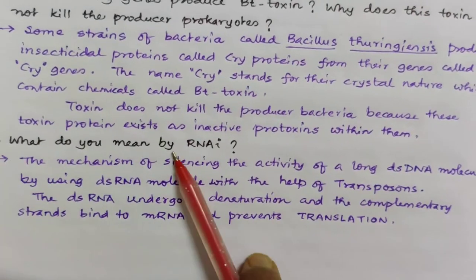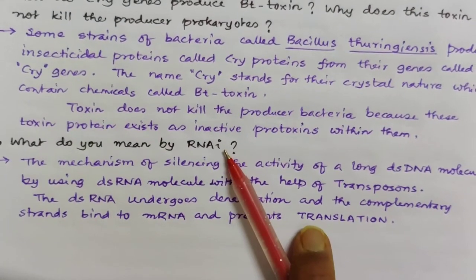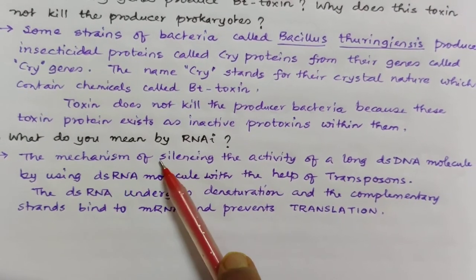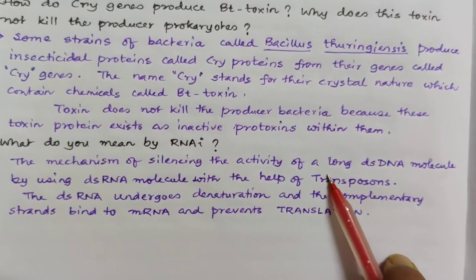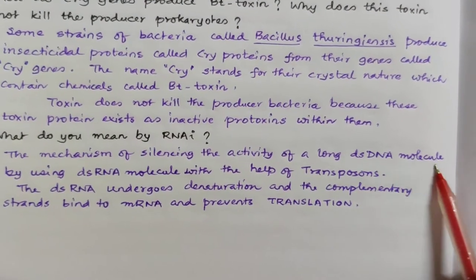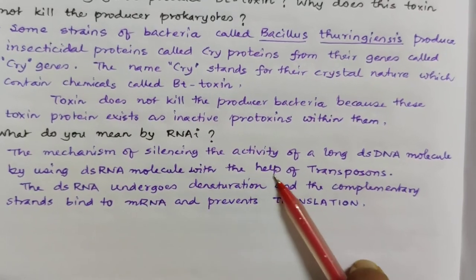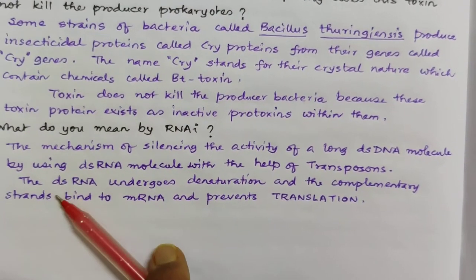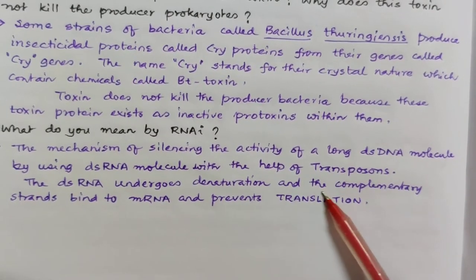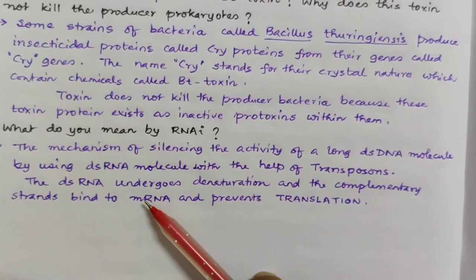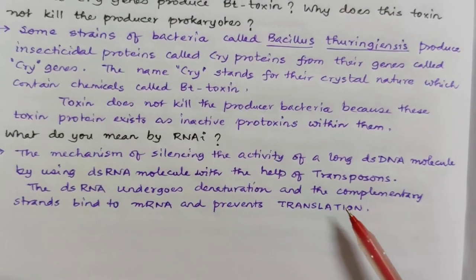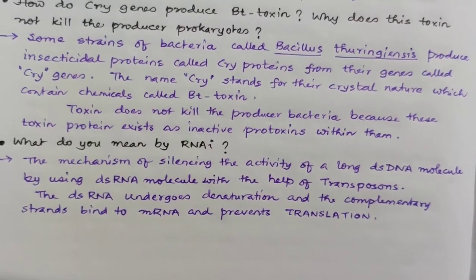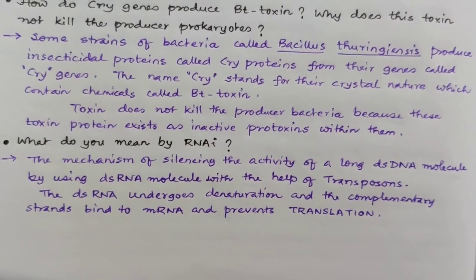What is RNA interference (RNAi)? The mechanism of silencing the activity of a gene by using a double-stranded RNA molecule with the help of transposons is called RNA interference. The dsRNA undergoes denaturation, and the complementary strands bind to mRNA, preventing translation.